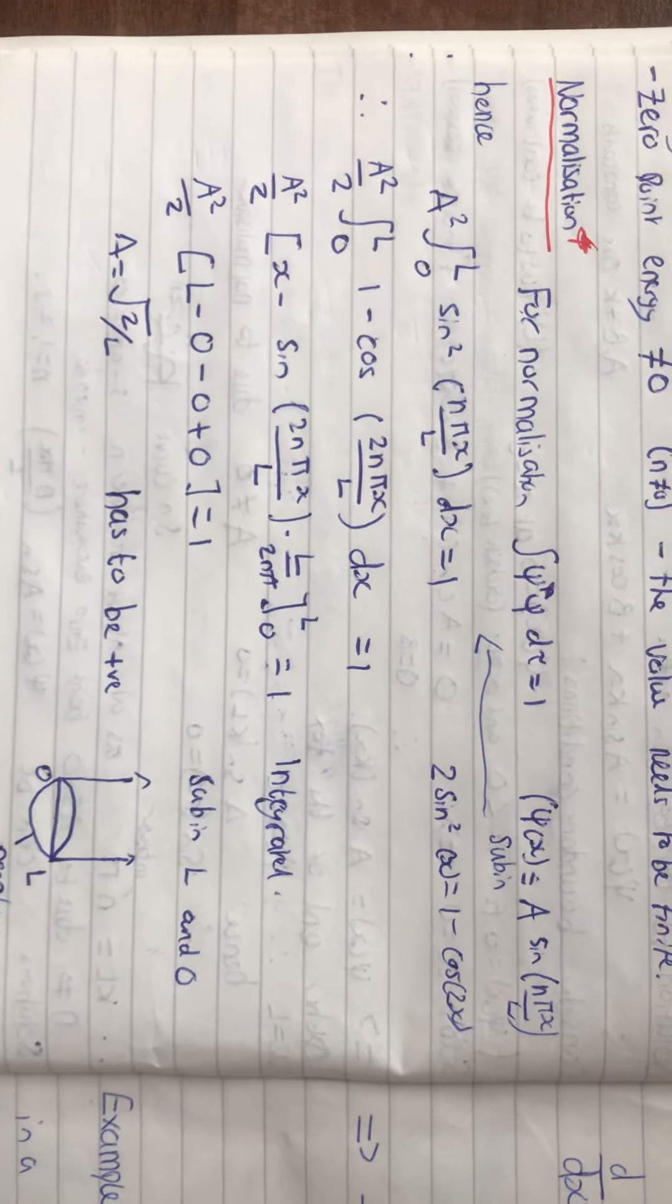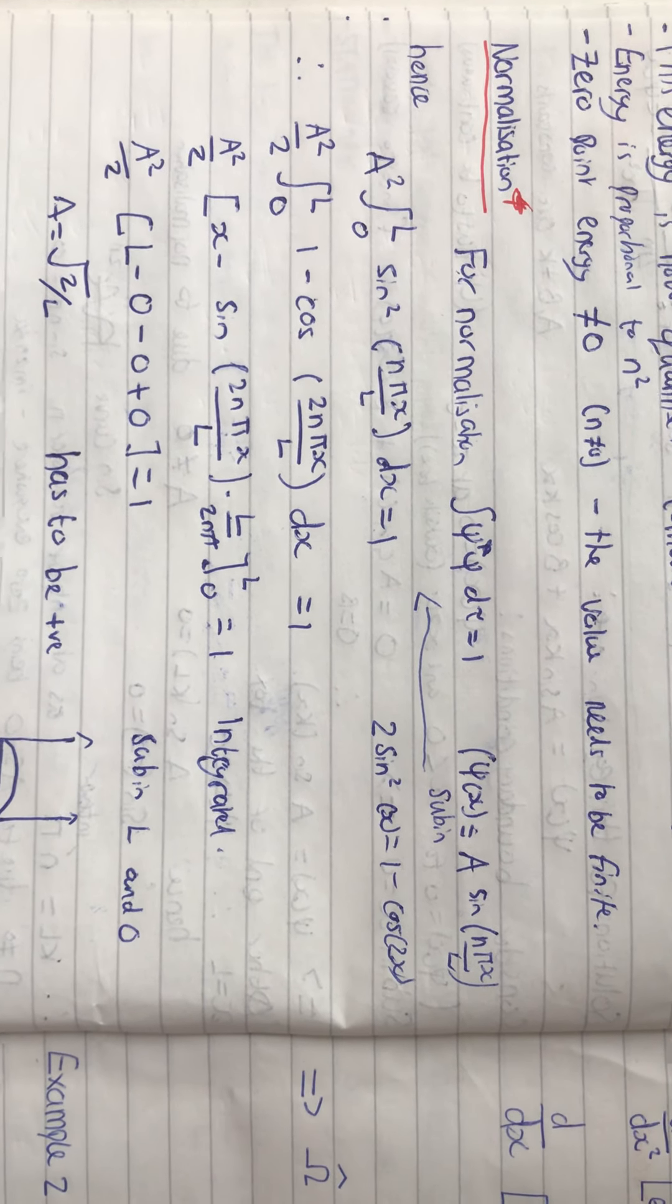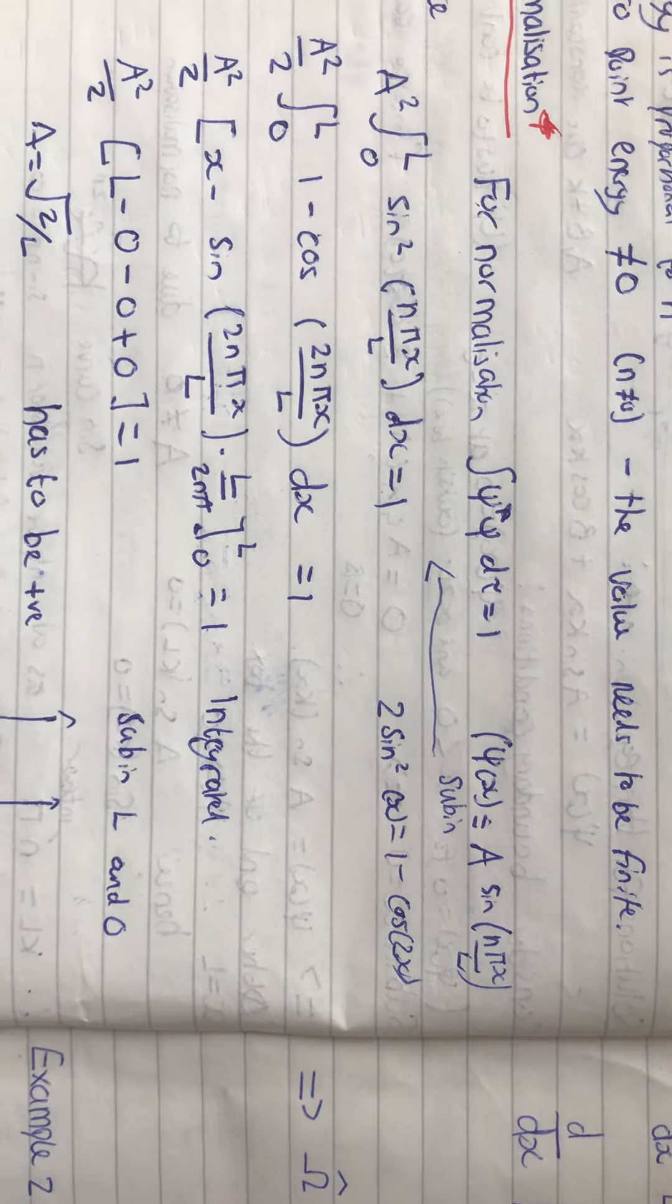So, if we go back to normalization again. For normalization, the integral of the wave function squared has to be equal to 1.